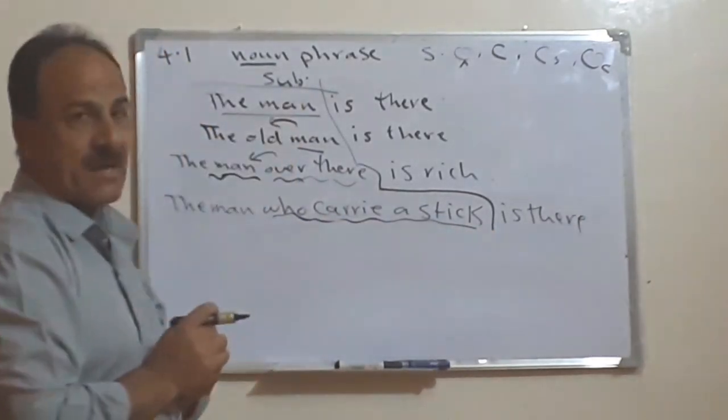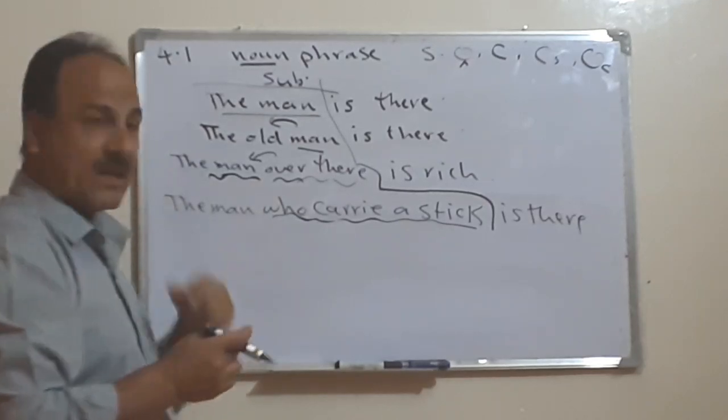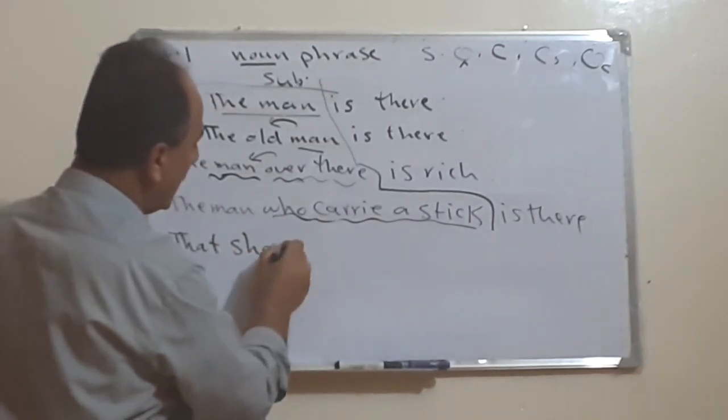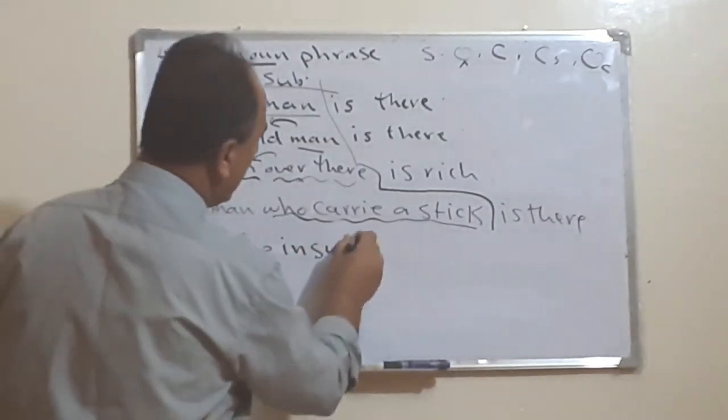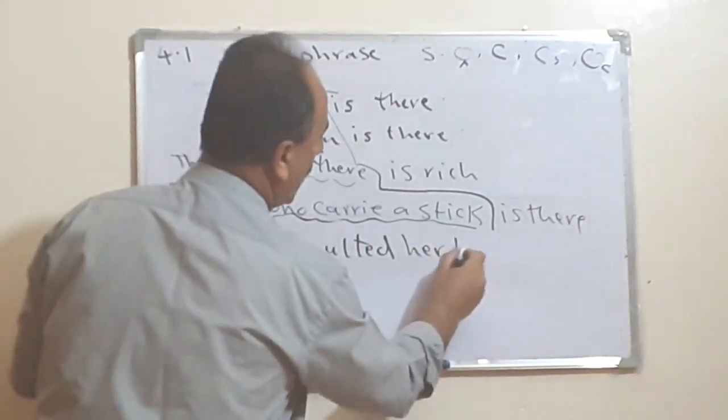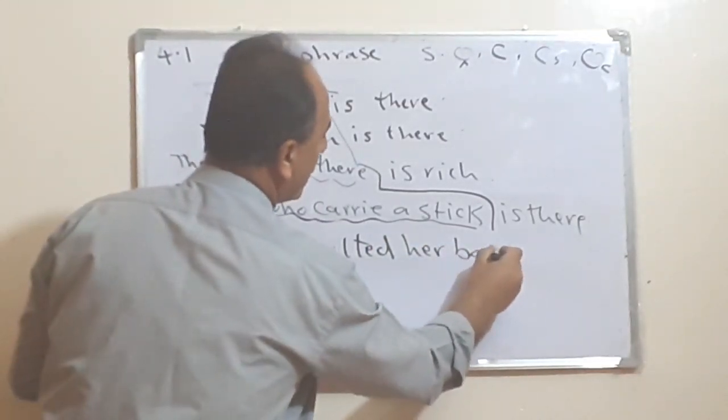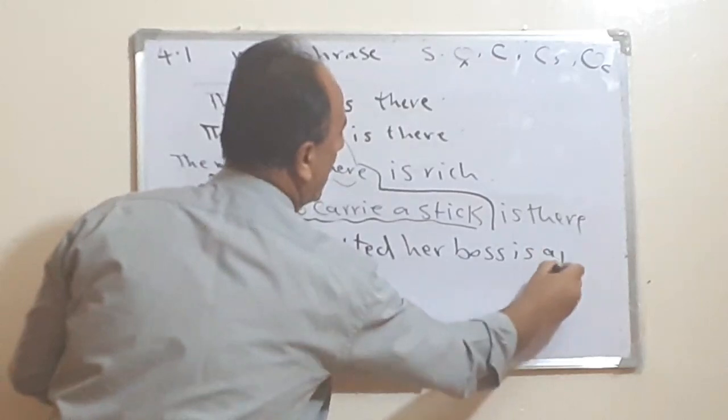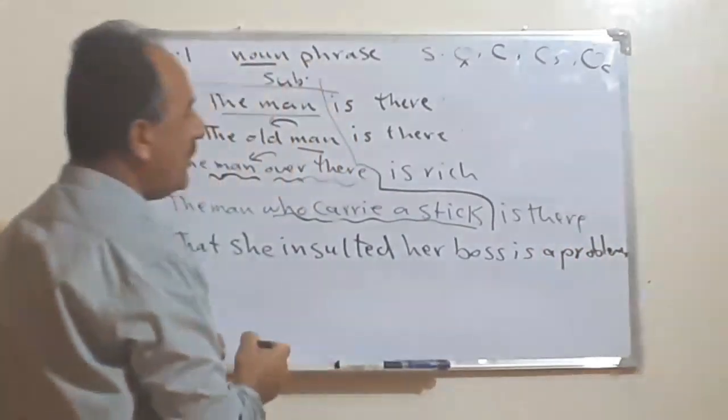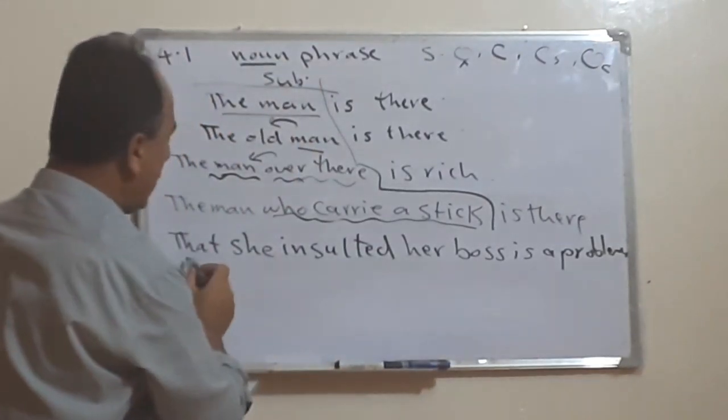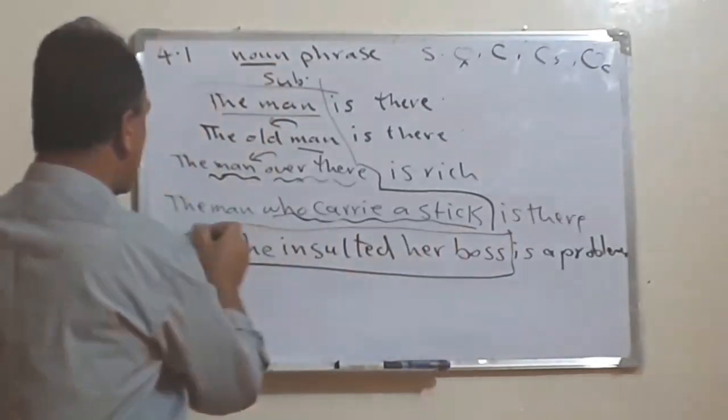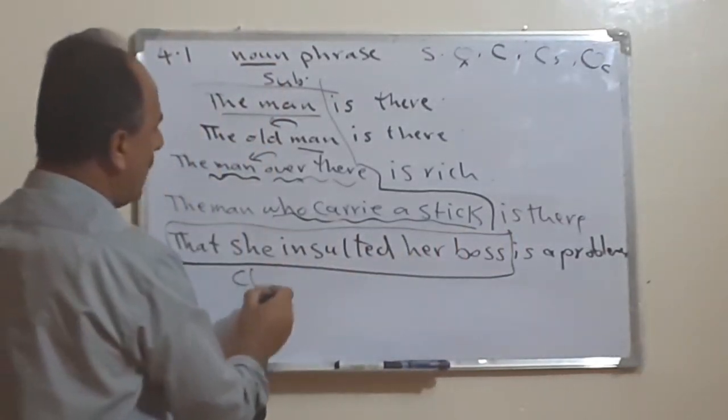Or even we can put a clause. For example, that she insulted her boss is problem. See, what do we have here? We have all this part from here up to here, which is all this one, which is a clause.